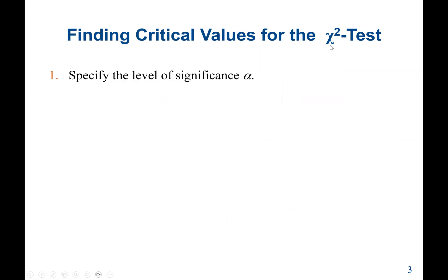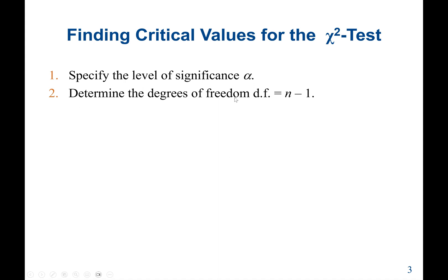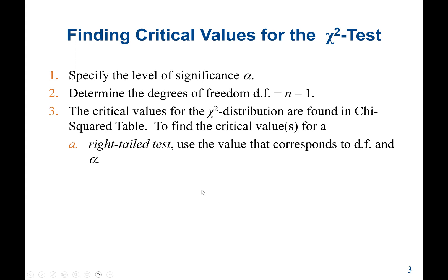To find the critical values for the chi-squared test, first we need to specify the level of significance — the alpha value — which will always be given to us. Then we need to know the sample size, which allows us to determine the degree of freedom. With the alpha value and the degree of freedom, we use the chi-squared distribution table to find the critical value — that is Appendix B, Table 6 in our textbook.